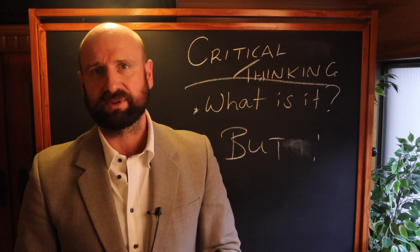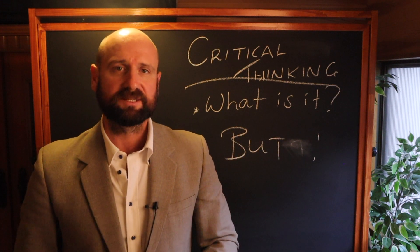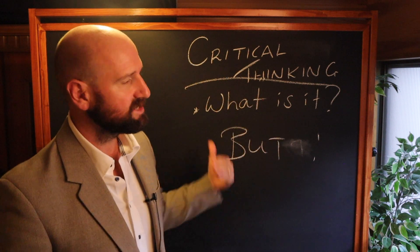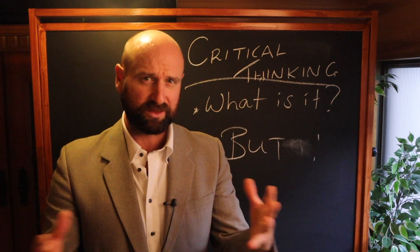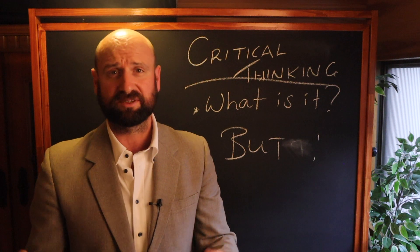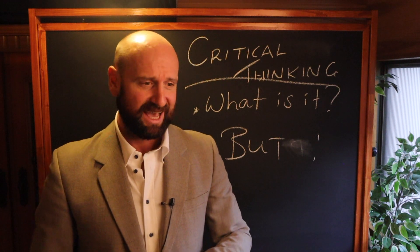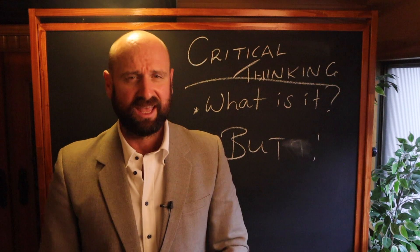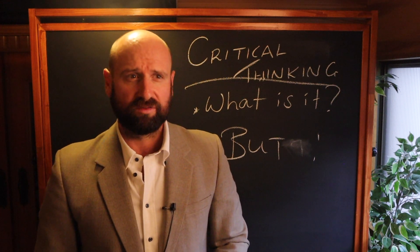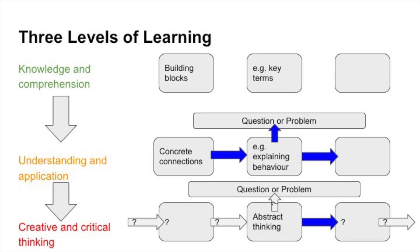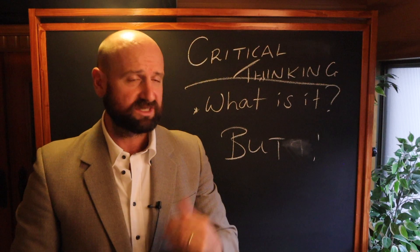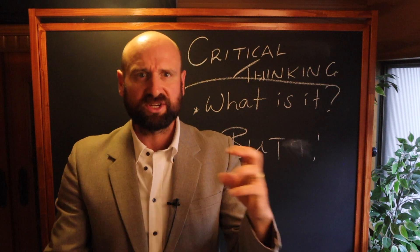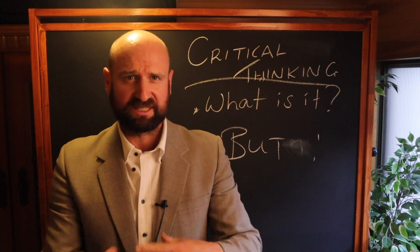This is based on our three levels of learning, which is what the semantic model is based on. You might think I've just been misspelling 'thematic' all this time, but there's a whole method to it — a whole philosophy behind it. It's based in the three levels of learning: knowledge and comprehension, understanding individual things; understanding application, connecting those; and then critical and creative thinking, which is the 'but' — asking questions about those different things and their relationships.